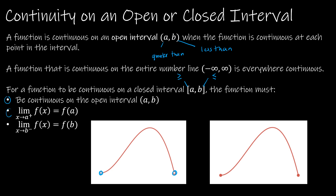Then the limit as x approaches a from the right has to equal f of a. So if this is a, then the limit from the right has to equal the actual endpoint f of a. And at b, same thing from the left — the limit has to equal f of b.